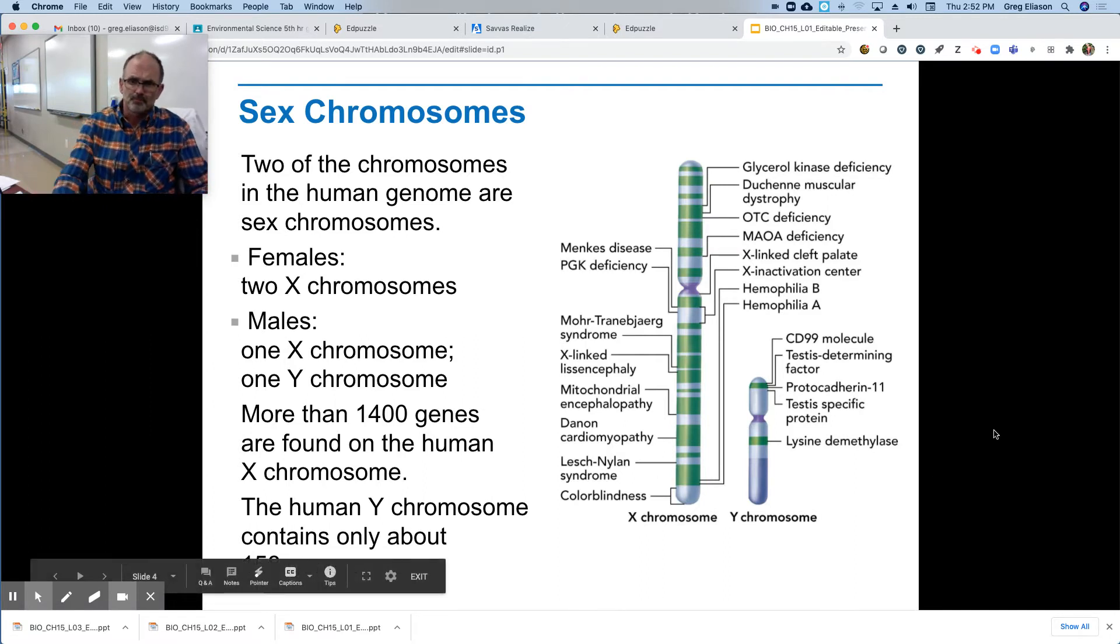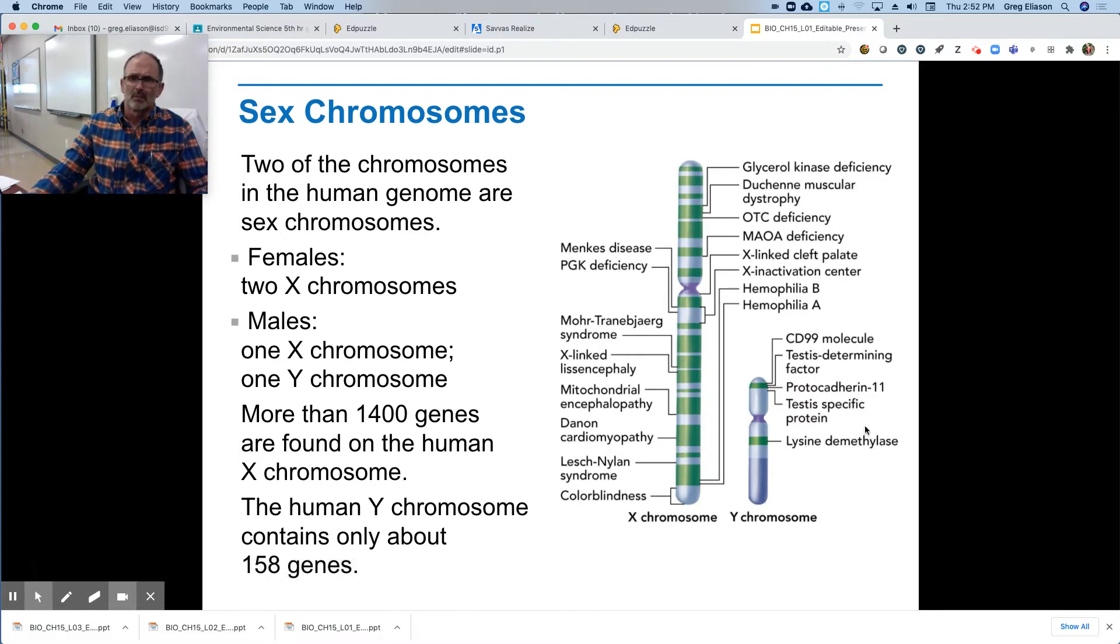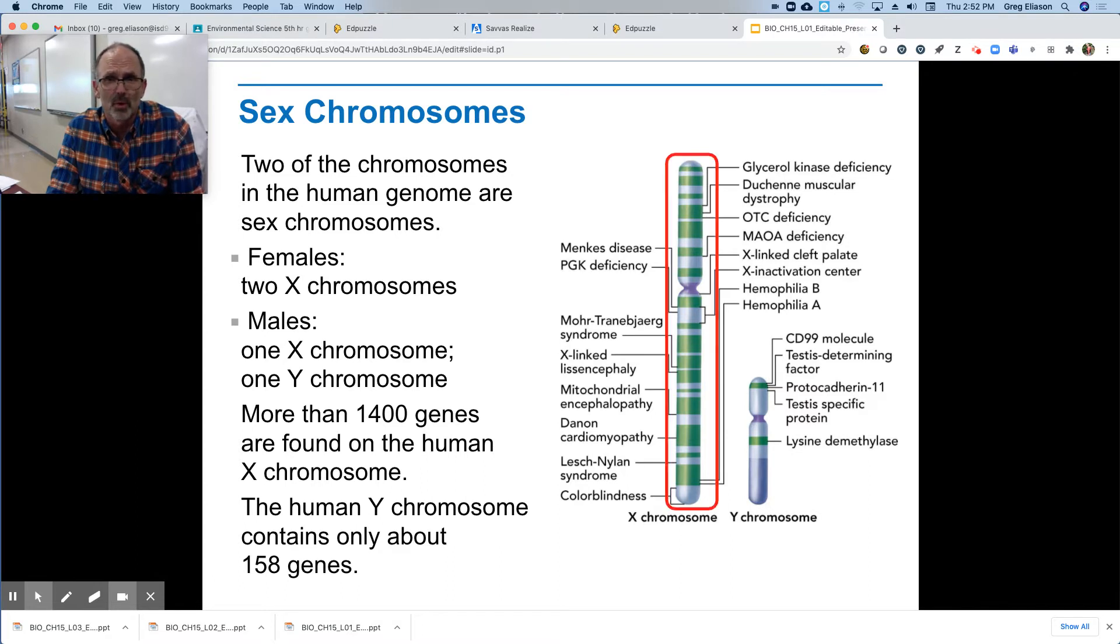And there's a variety of genes on the Y chromosome. There are many more than this. This is just a simple version, okay? So the X chromosome is physically larger than the Y chromosome and contains more information.